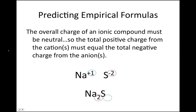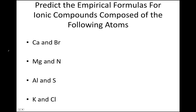So the correct ionic formula for the compound made from sodium and sulfur would be Na₂S. Remember, if the subscript on an atom is one, we don't typically write that one in the formula.